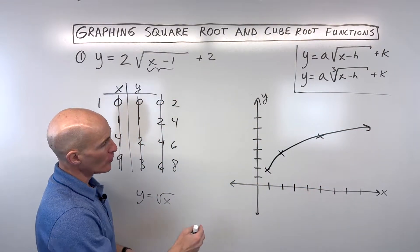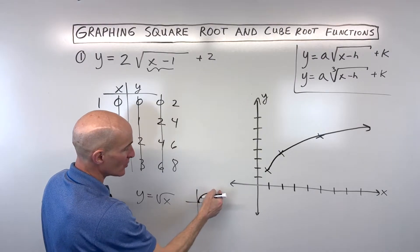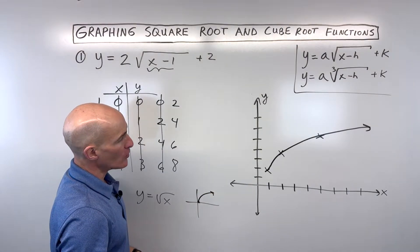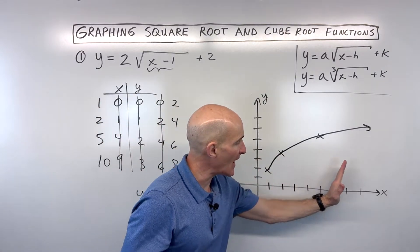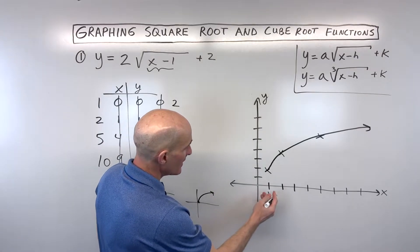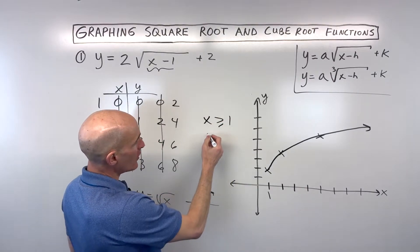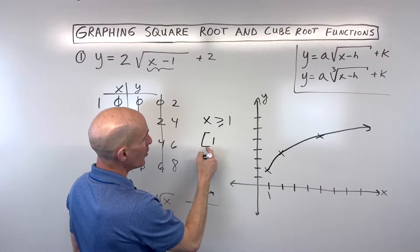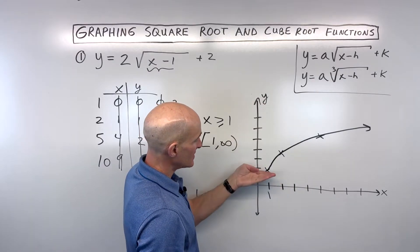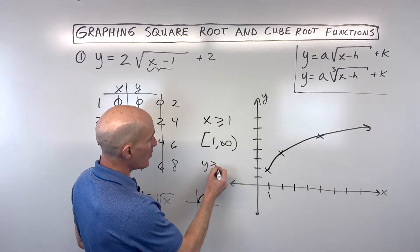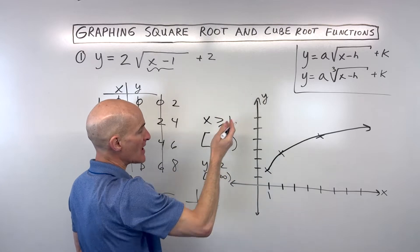Now sometimes I'll ask about the domain and the range. The domain is what the x-values can be, and you can see here it's going to be x is greater than or equal to 1. You could write it as x ≥ 1, or in interval notation as [1, +∞). The range — the y-values — you can see it's at 2 or higher, so the range is y ≥ 2, or in interval notation, [2, +∞).